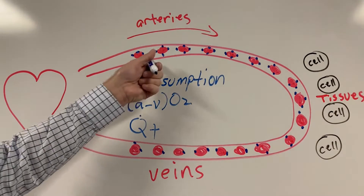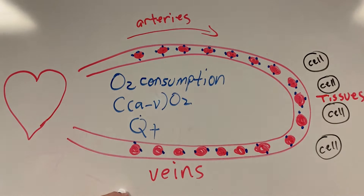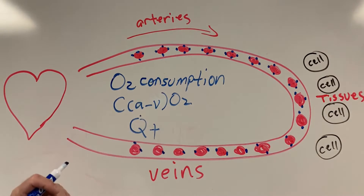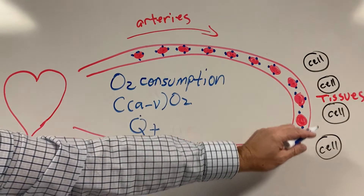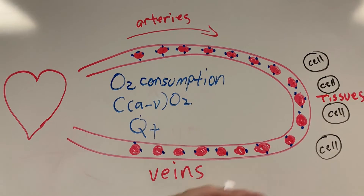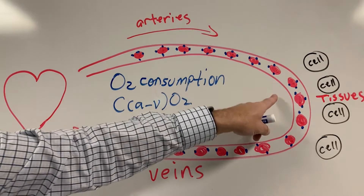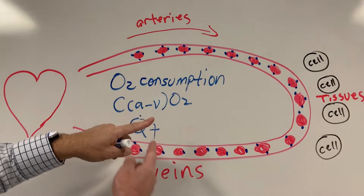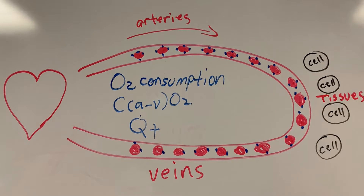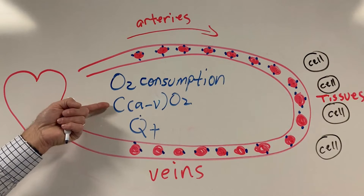We have the systemic arteries that are carrying oxygenated blood out to the tissues and returning deoxygenated blood through the veins back to the heart. If we look at the AV difference and the effect of O2 consumption — as the cells consume oxygen and pull oxygen off of the hemoglobin, the more they pull off (say consumption went up from fever or sepsis), the less gets returned. Like food on a table: the more people eat, the less you bring back to the kitchen. So as cells consume more oxygen, the venous side gets less, making the difference between CaO2 and CVO2 greater. The more the consumption, the bigger the AV difference.